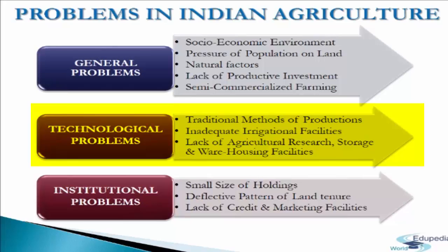The second technological problem is inadequate irrigation facilities. Statistics show that only 36% of gross cropped area has irrigation facilities; in other words, 64% of the area continues to depend on rains. Due to insufficient, uncertain, and irregular rainfall, productivity is very low. Moreover, even in areas with irrigation facilities, the potential is not fully utilized because of defective management, and the increasing cost of irrigation means small and marginal farmers cannot make use of available facilities.